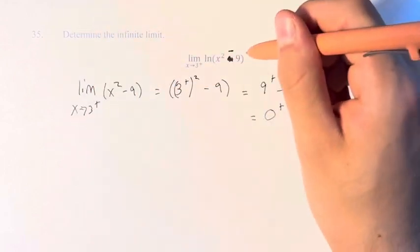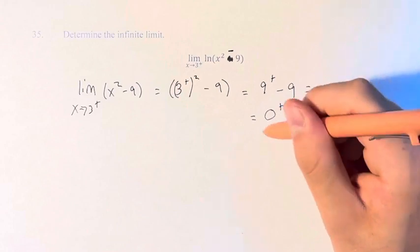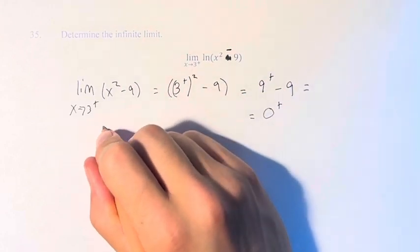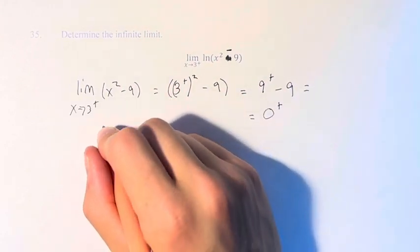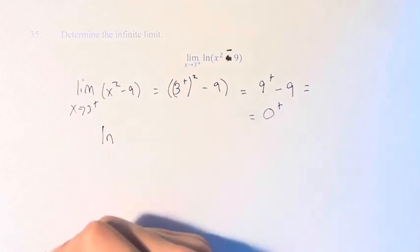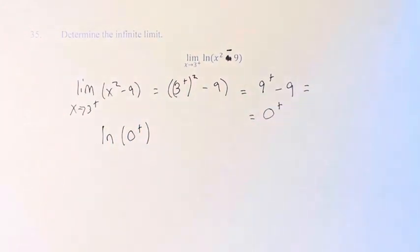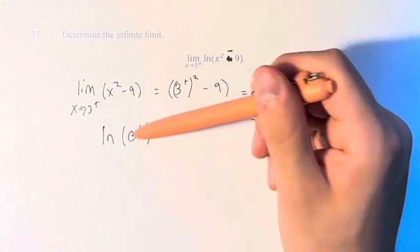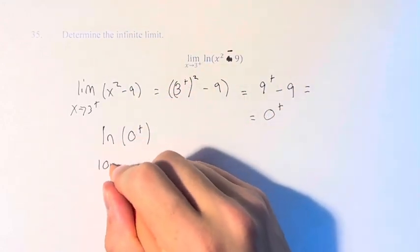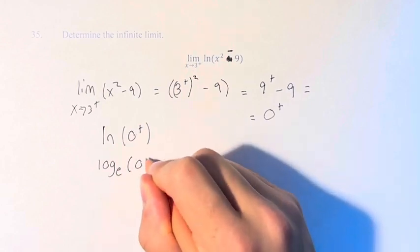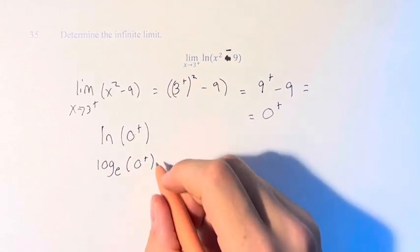So the inner function goes to 0. So this is basically the value of the natural log as it approaches 0. What does that actually mean?